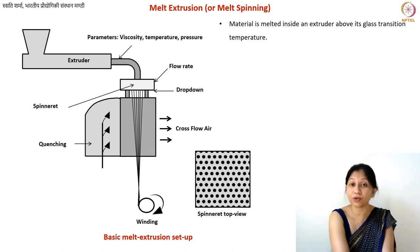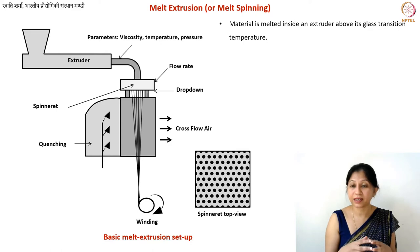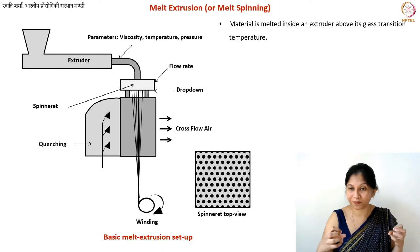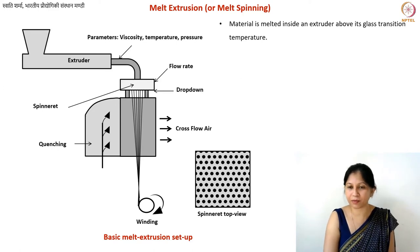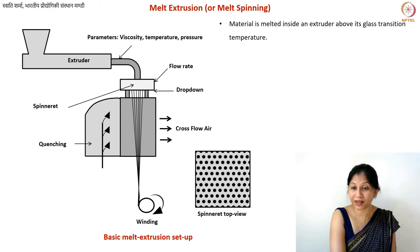First, you melt your material — whatever polymer or pitch you have — above its glass transition temperature. Glass transition temperature is a very important concept: it is the temperature below which the material behaves like a glass. Above this temperature, the material is sort of melted or in a flow state. The flow of polymer chains has a slightly different mechanism compared to melted metals, which makes polymers very interesting. Glass transition temperature is one of the important properties for fiber fabrication.